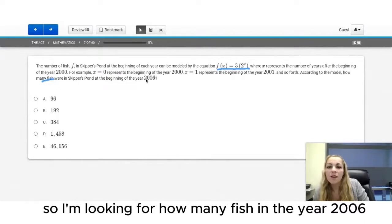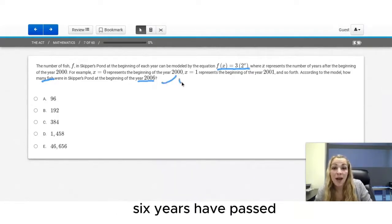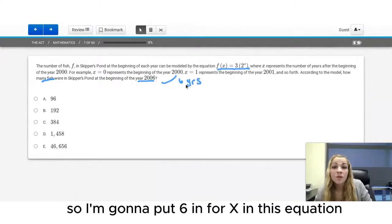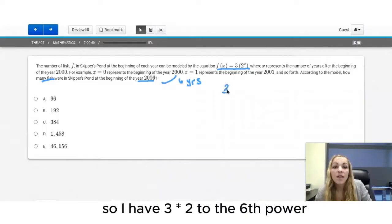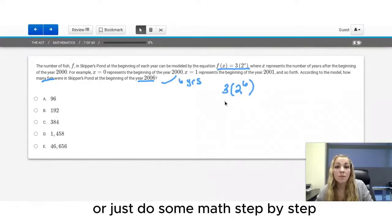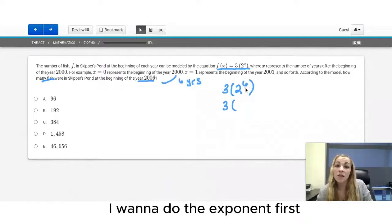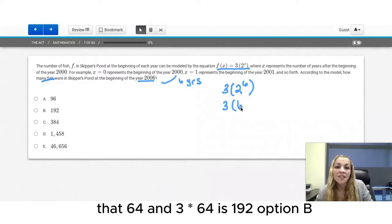So I'm looking for how many fish in the year 2006. From the year 2000 to the year 2006, six years have passed. So I'm going to put 6 in for x in this equation. So I have 3 times 2 to the sixth power. I can plug that all into my calculator or just do some math step by step. 3 times 2 to the sixth power, I want to do the exponent first. That's 64, and 3 times 64 is 192. Option B.